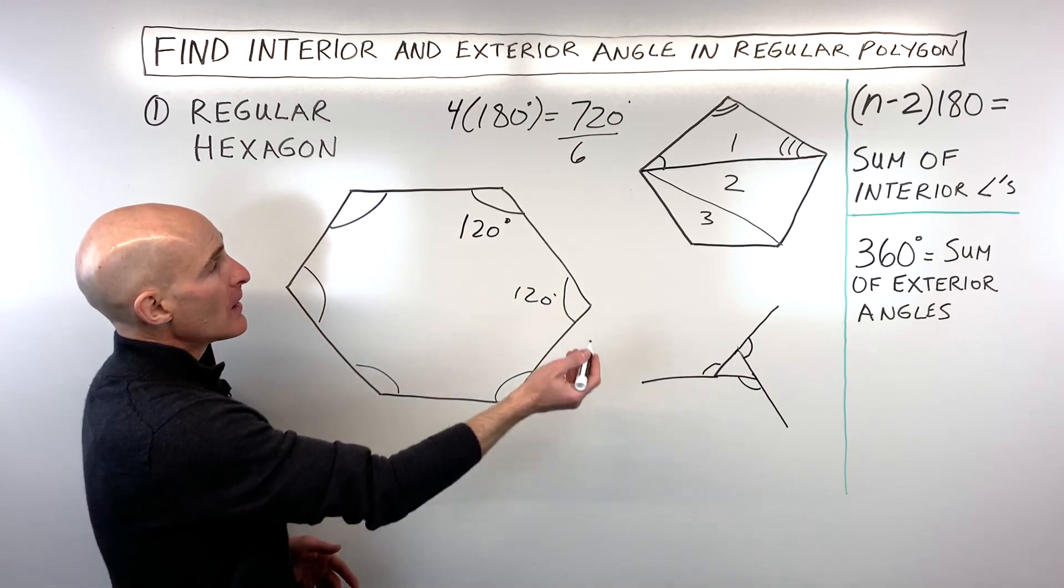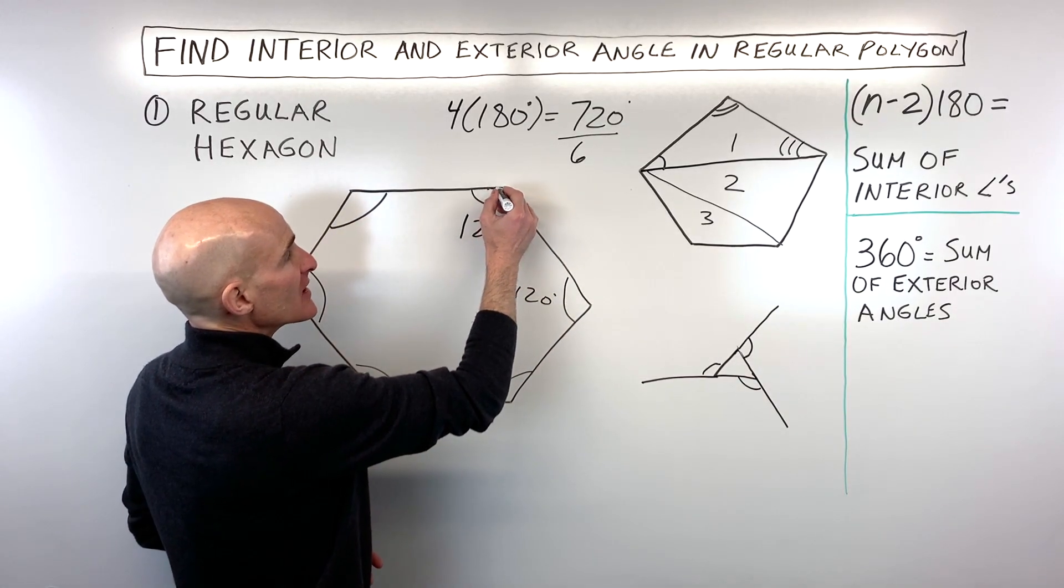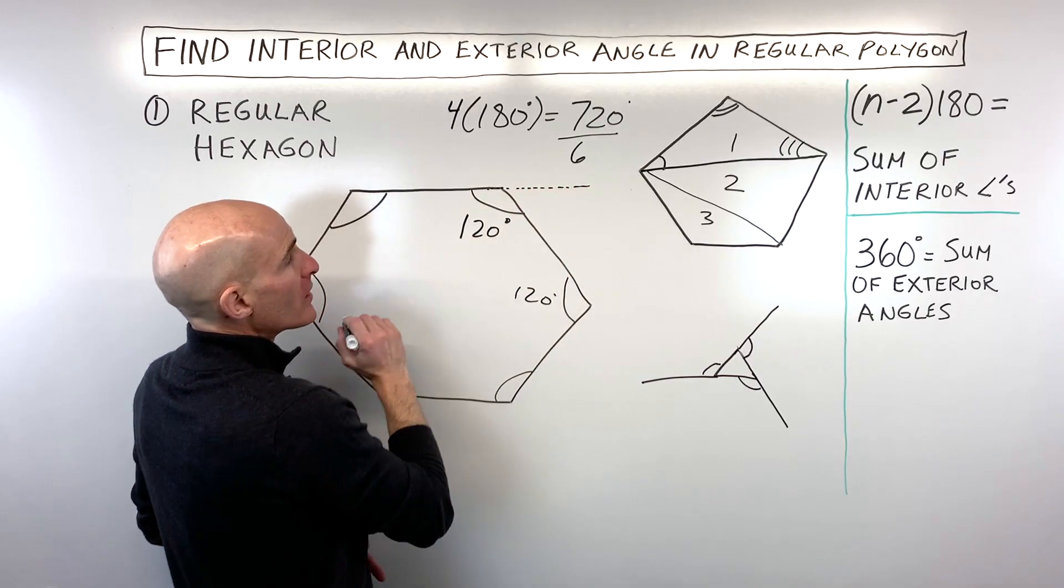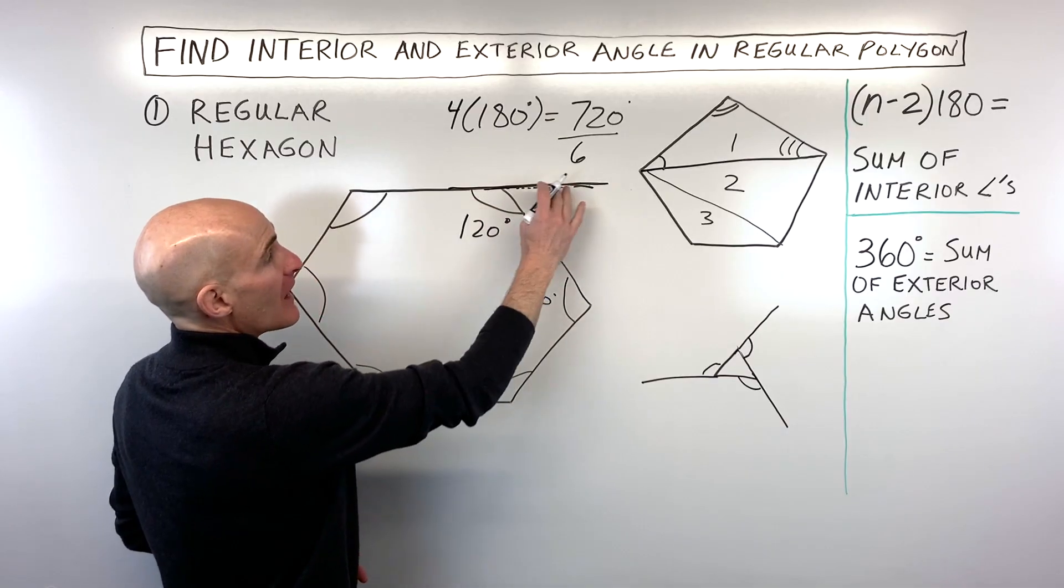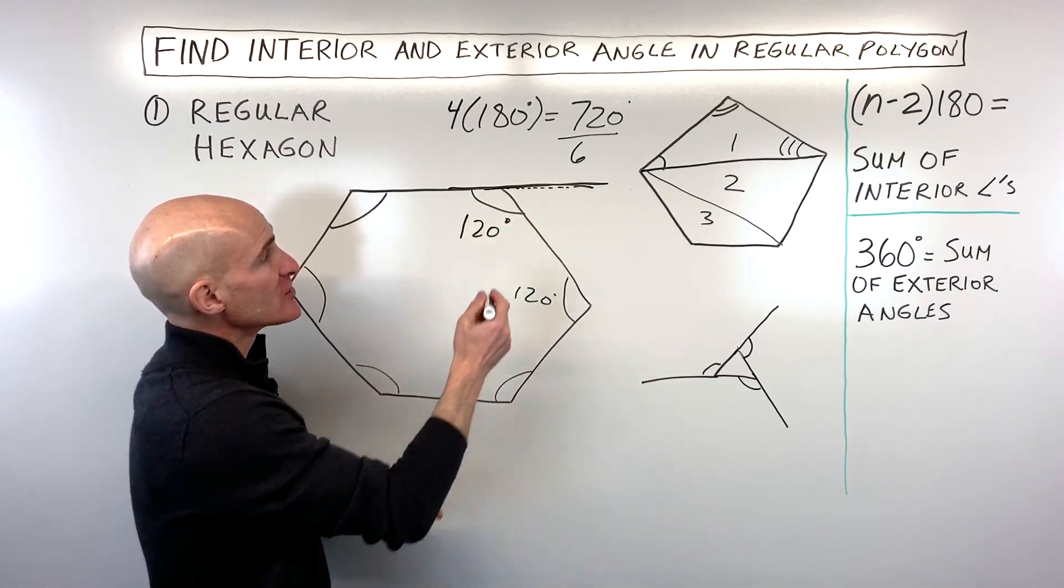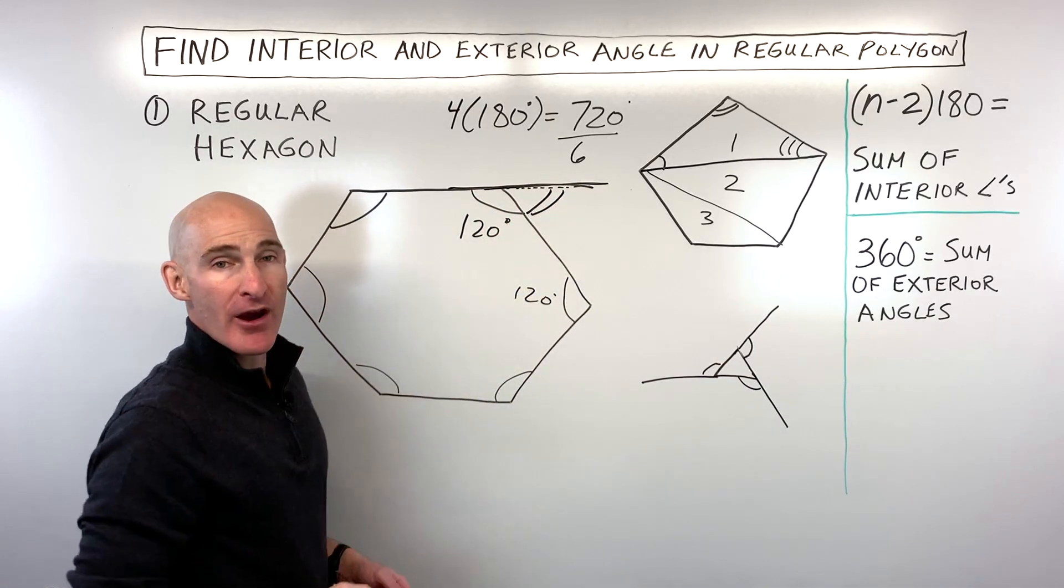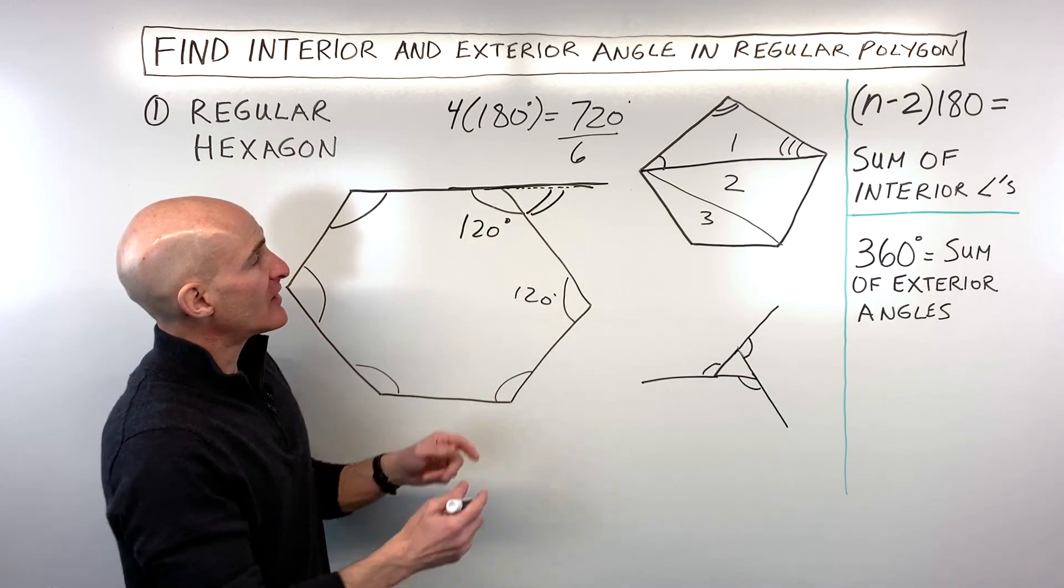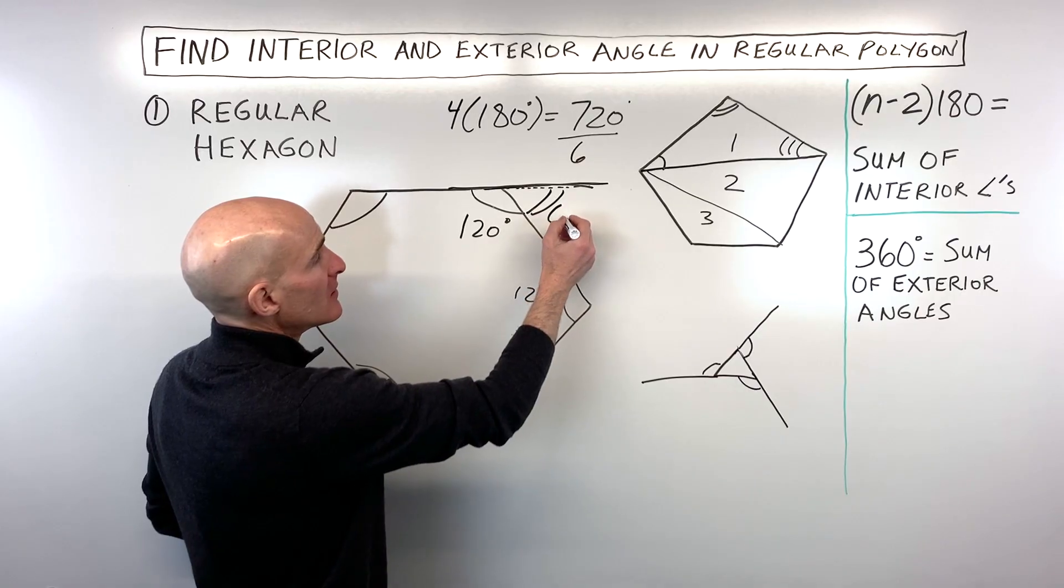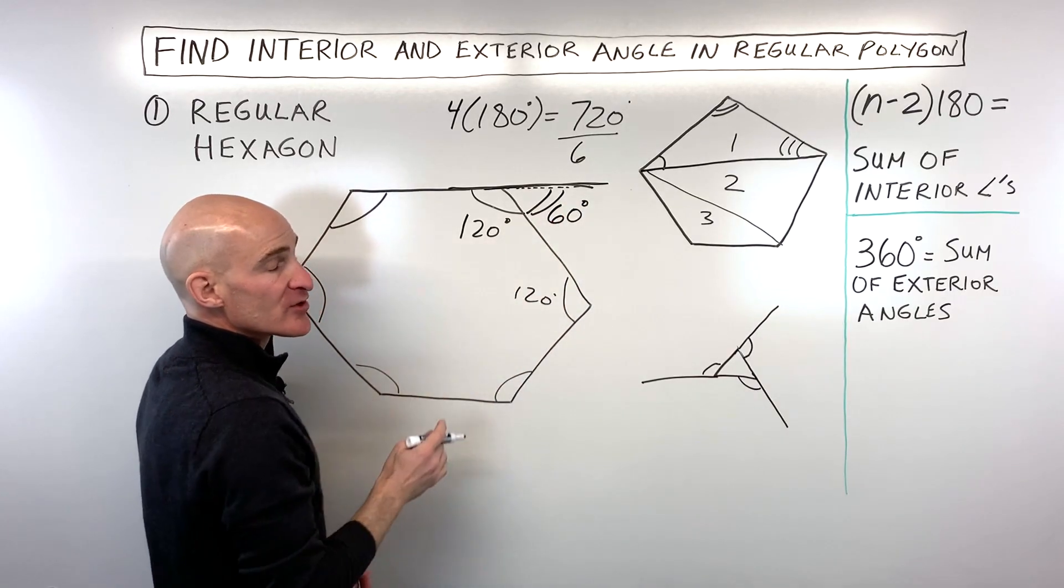How do we find the exterior angle? Well, a simple way is just to extend one of these sides like so. And you can see that this forms a line. And we're going to have two angles that form what we call a linear pair. So linear means line, pair means two. And so these two angles have to add up to 180. So that means that the exterior angle equals 60 degrees.